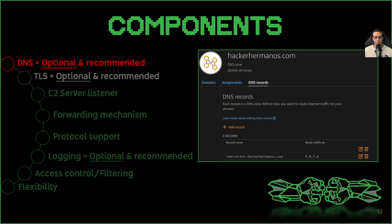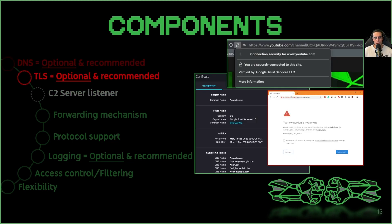Domain Name System: we would want to have a domain name that sounds convincingly benign to make it harder for incident responder Gary and his threat hunter colleagues to think that there is anything funky going on with the domain. Once we have selected our domain name, we need to create some DNS records in the hosting zone that point to the publicly available IP address of our C2 redirector's listening interface. Another optional but recommended component is TLS. TLS is another factor that helps make our C2 infrastructure look less suspicious. We would want to have a certificate issued by a certificate authority to our convincingly benign domain name to make it harder for incident responders and threat hunters to identify our C2 redirector domains as suspicious.